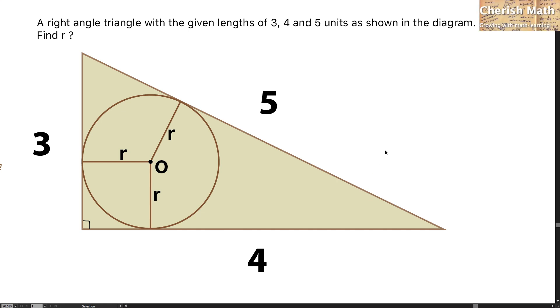Say hi from Cherish Math, and this is the question for today. A right angle triangle with the given lengths of 3, 4, and 5 units, as shown in the diagram. Find R, or the value of the radius of this circle.